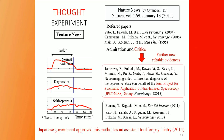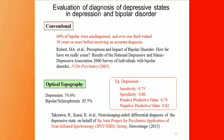We conducted further experiments, and finally the Japanese government approved this method as an assistant tool for psychiatry in 2014. The important thing is that in conventional psychiatry, papers from 2003 showed that after many years of investigation, 69% of bipolar patients were misdiagnosed, and over one-third waited 10 years or more before receiving an accurate diagnosis. That's why we are heavily involved in this field in collaboration with psychiatrists.